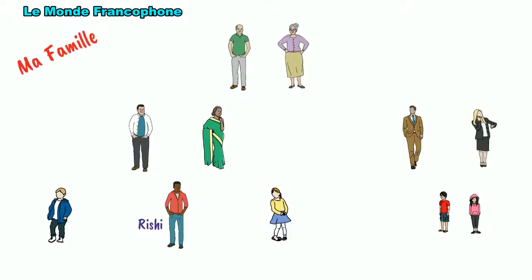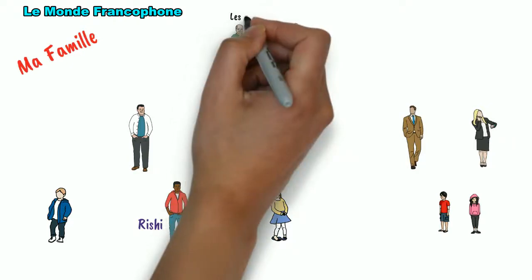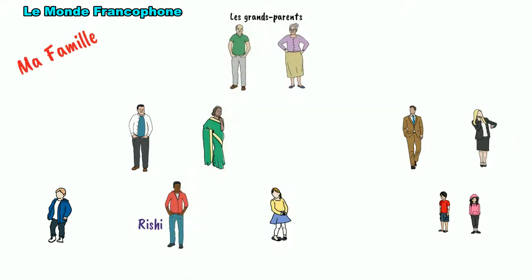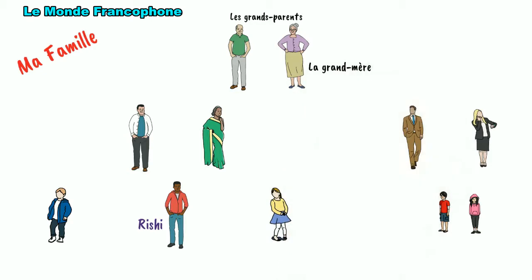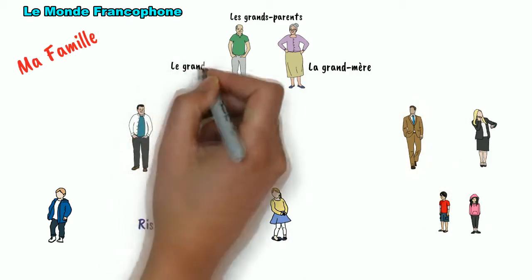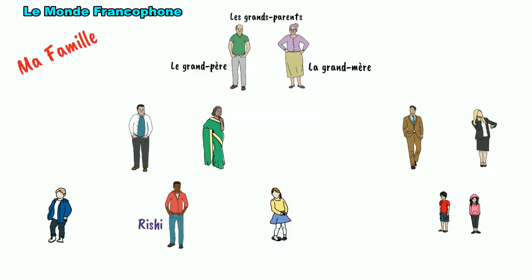In this family tree, the head of the family will be les grands-parents. The grandparents in French is les grands-parents. The grandparents are comprised of grandmother and grandfather. So grandmother in French is la grand-mère and grandfather is le grand-père. Then comes parents.